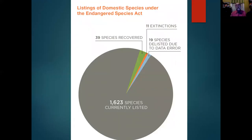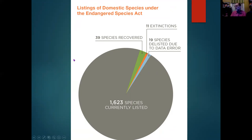The ESA has had some successes. About 1,600 species are on the list today — quite a ways from the 75 on the original list. Almost 40 species, including the alligator, have been documented to be recovered. Some have gone extinct — 11 since it's been in effect.